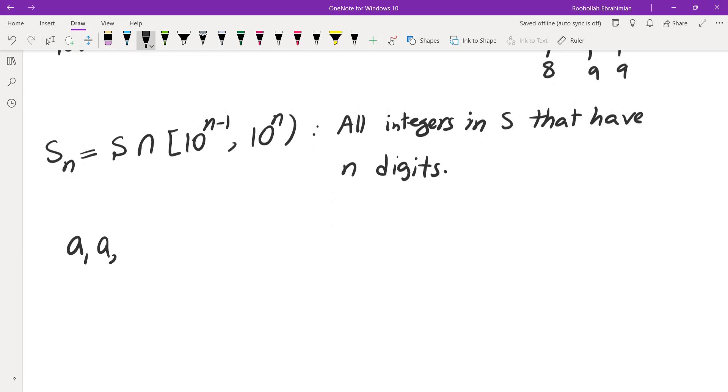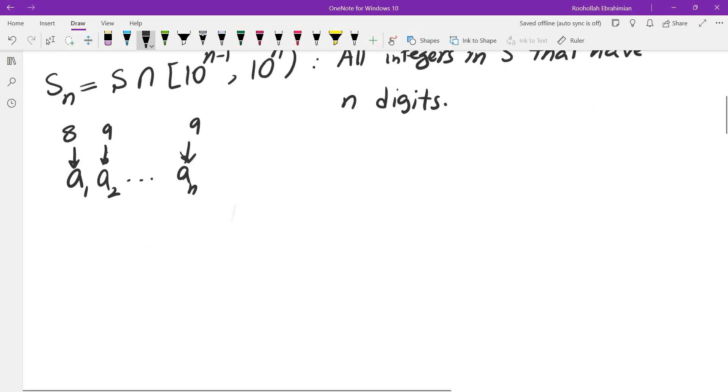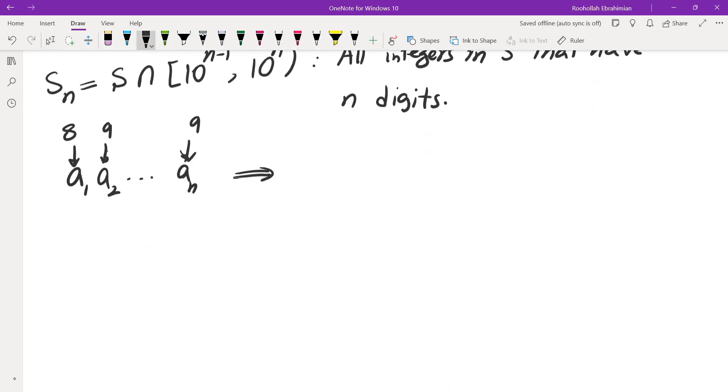If you have N digits, you have A_1, A_2, all the way to A_N. The first digit can be any of the numbers from 1 through 9 except for 7, so there are 8 possibilities for that. The rest of the digits are going to have 9 possibilities. So that means there are 8 times 9 to the power of N minus 1 numbers in S_N.